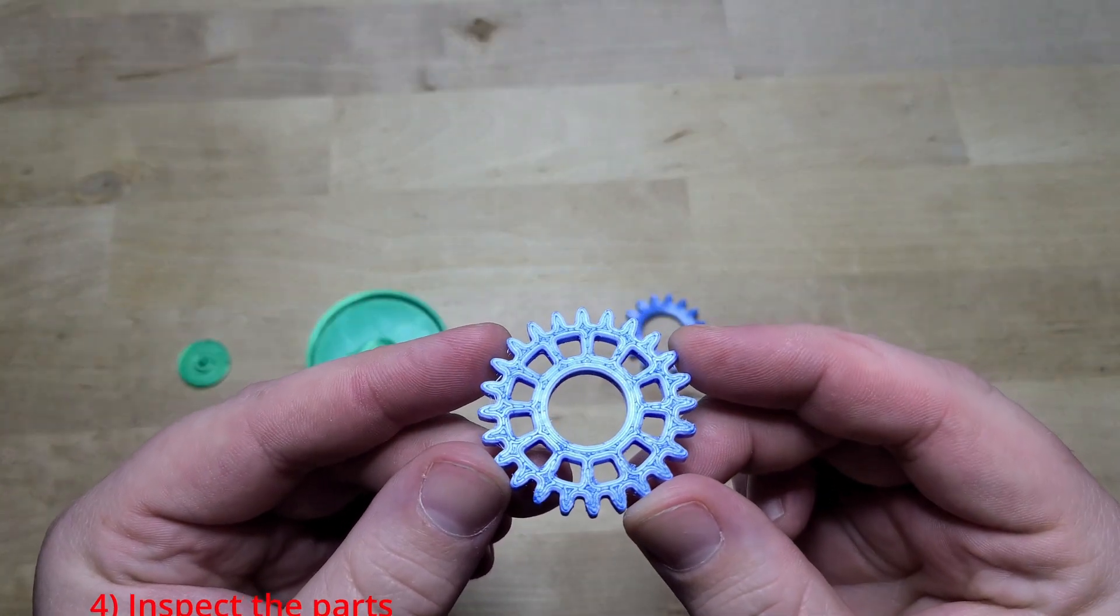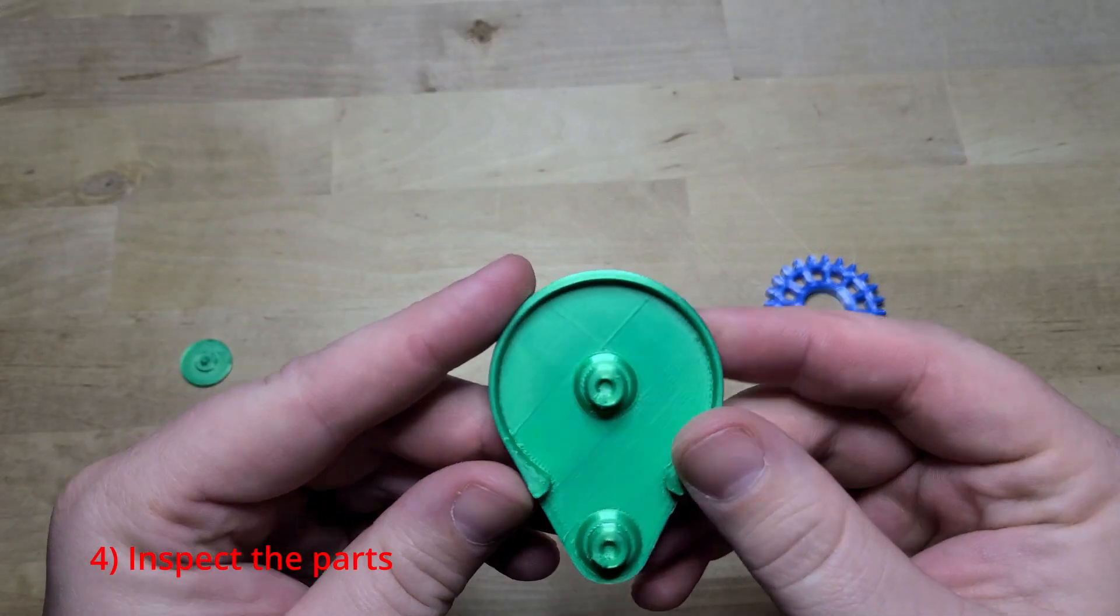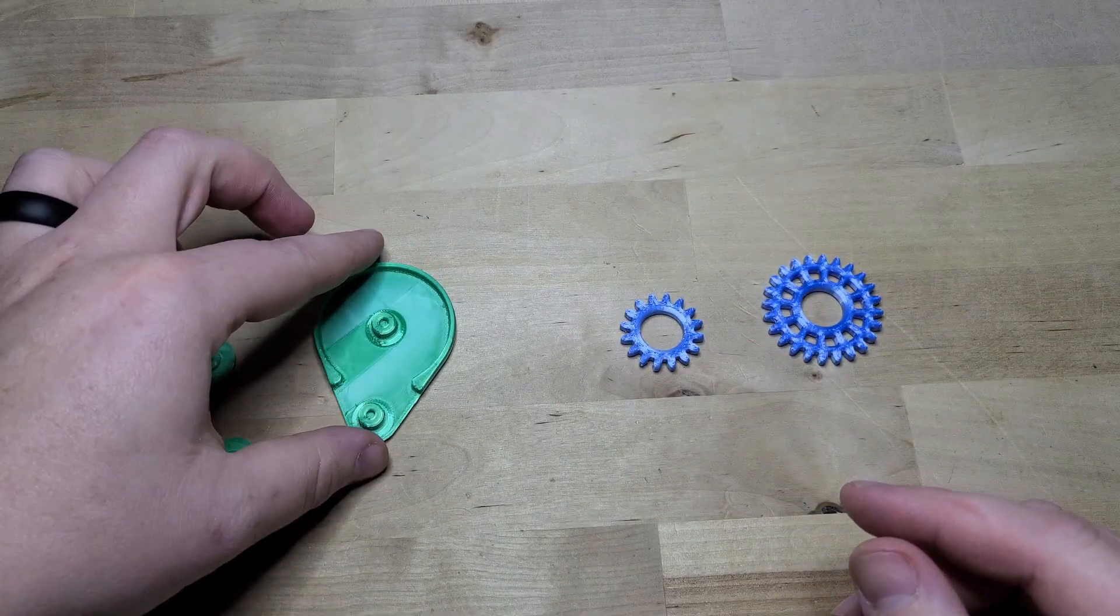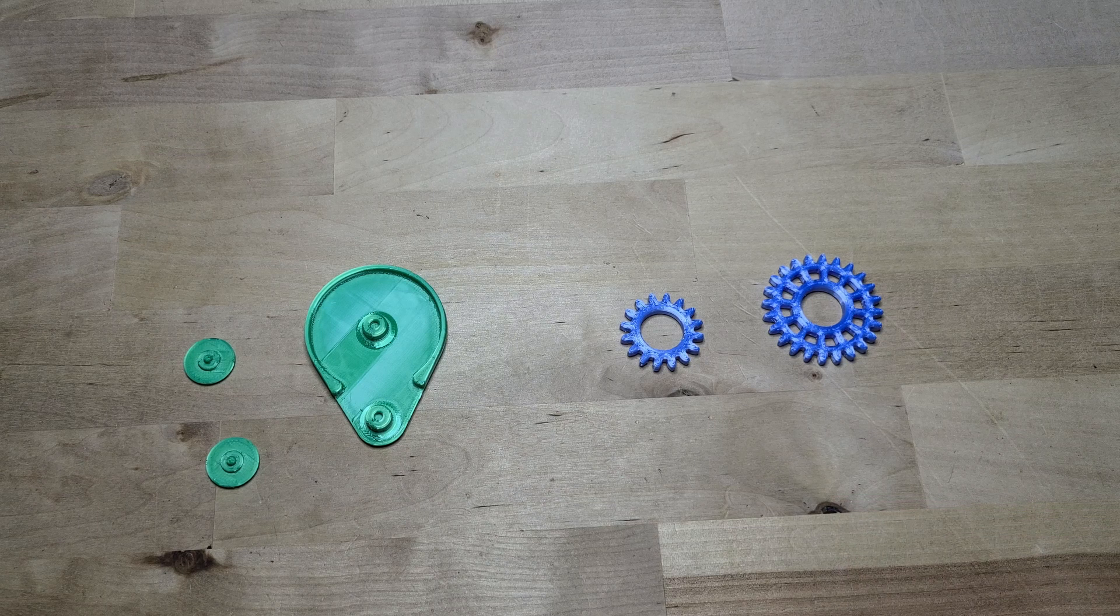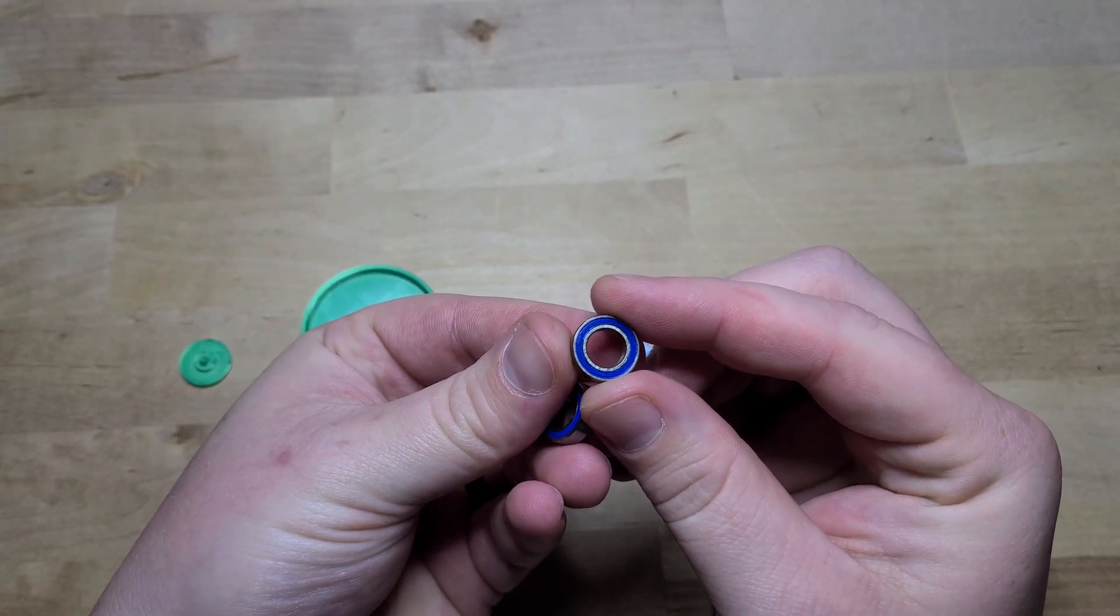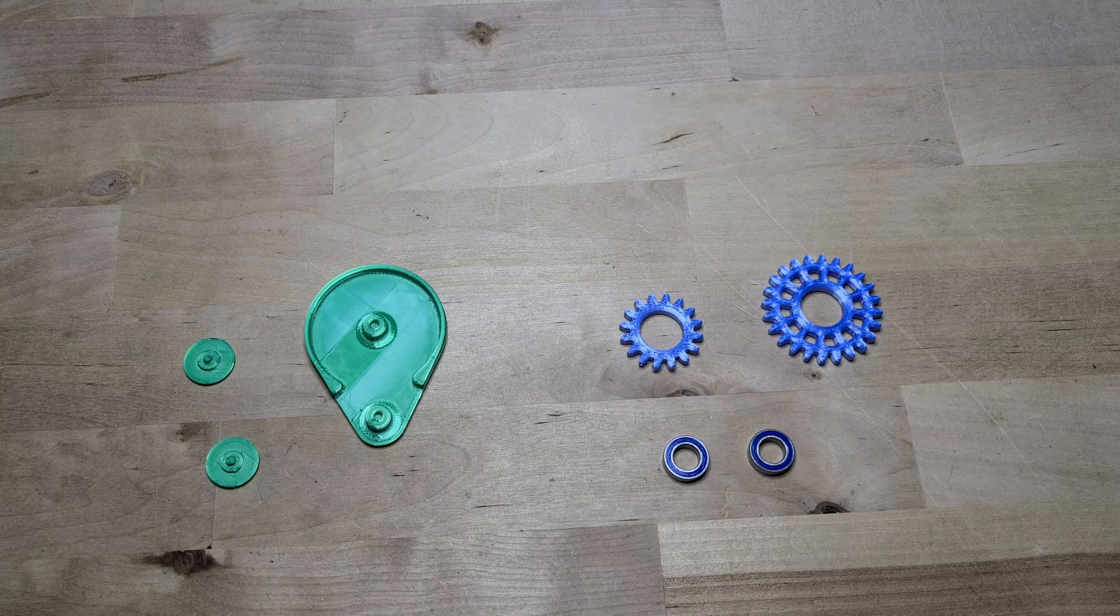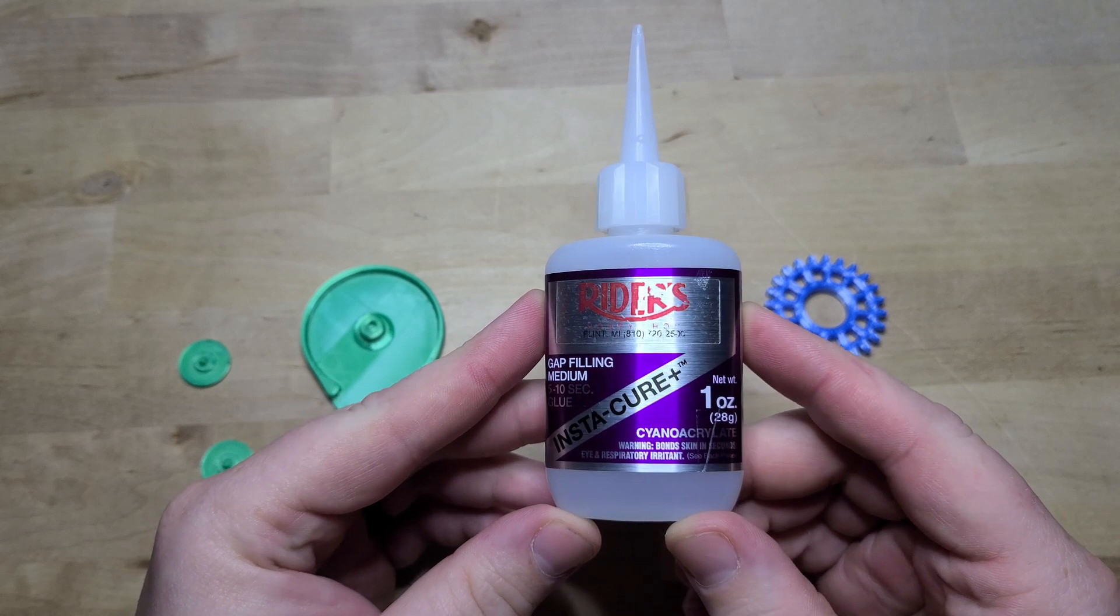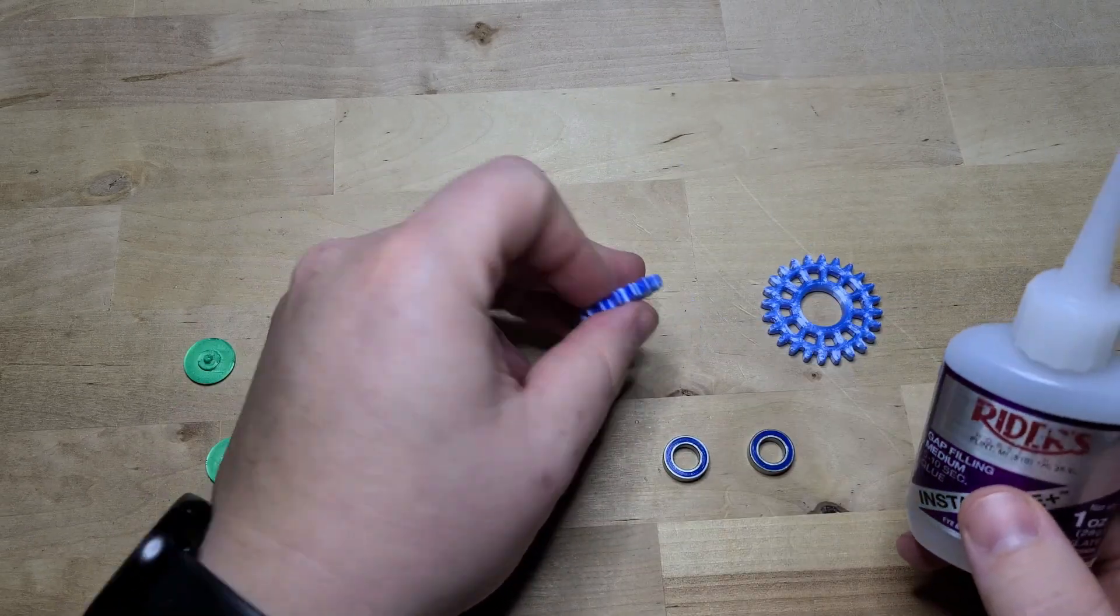Here I'm inspecting each piece for print defects. We'll be using these bearings I got on Amazon. I've used them in some other projects and I'll link them in the description. We'll also be using this super glue. I recommend using an activator spray for instant curing.